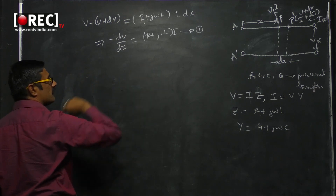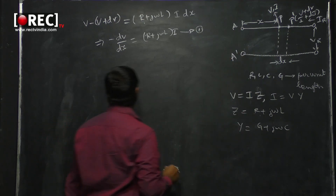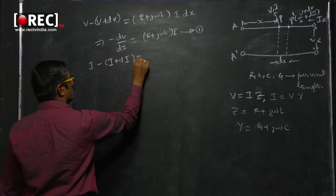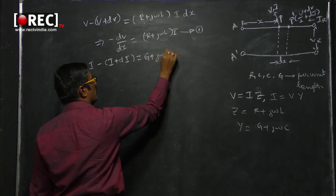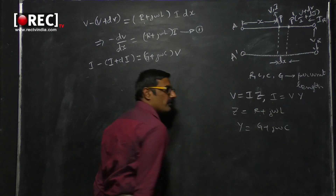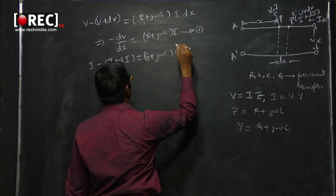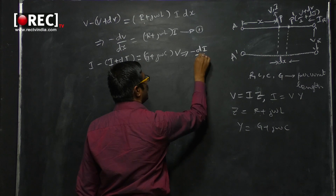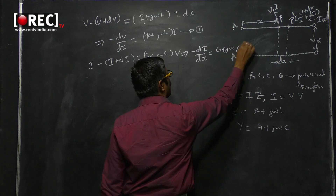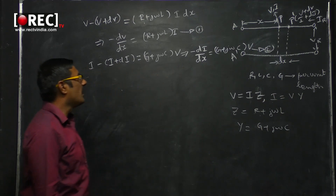Applying KCL at point P, I minus (I plus dI) equals (G + jωC) times V, because I equals V times Y and the admittance is replaced by G + jωC. From this, minus dI by dx equals (G + jωC) times V. We call this equation number two.